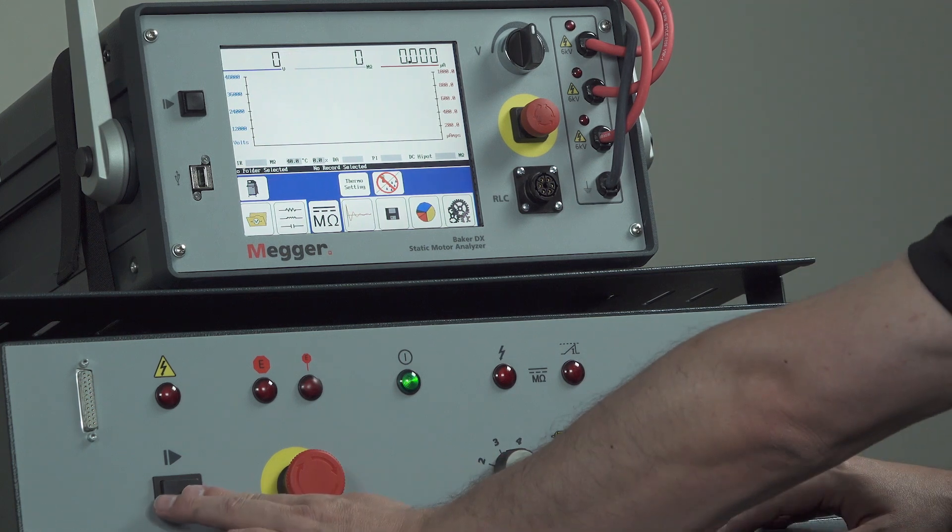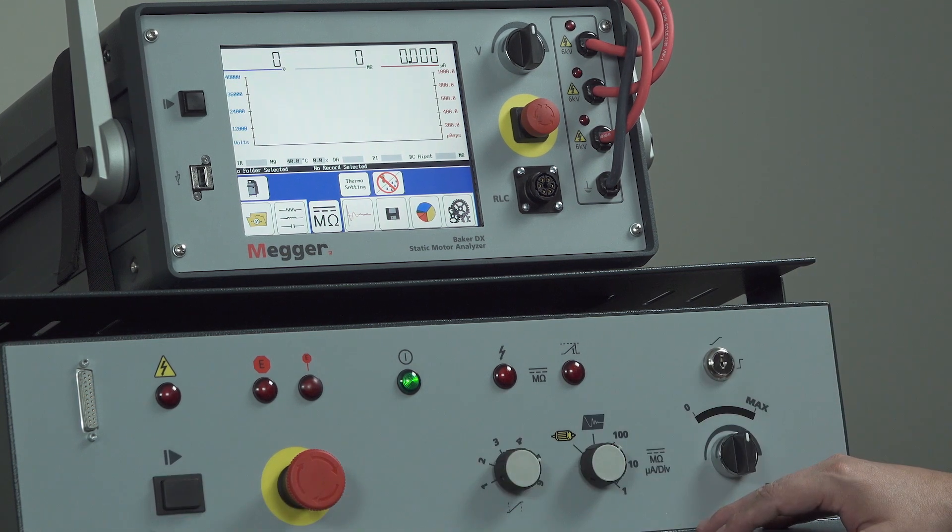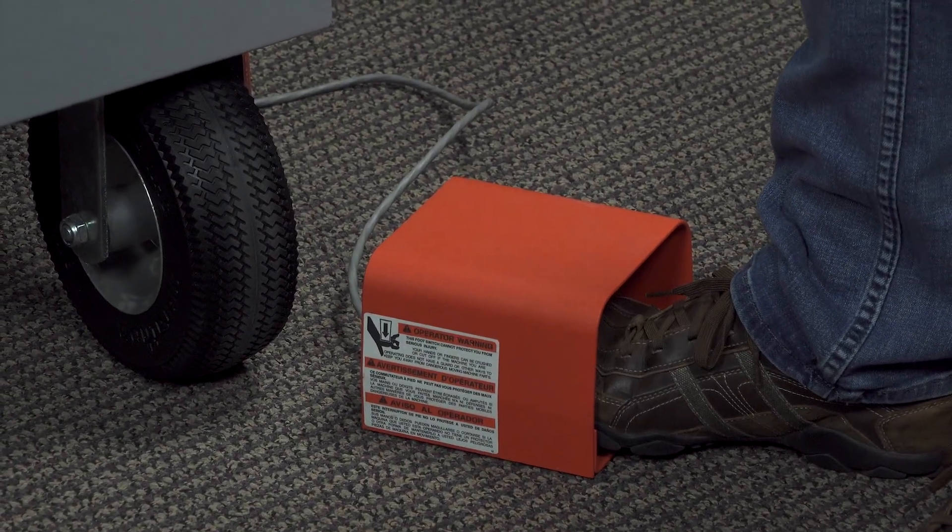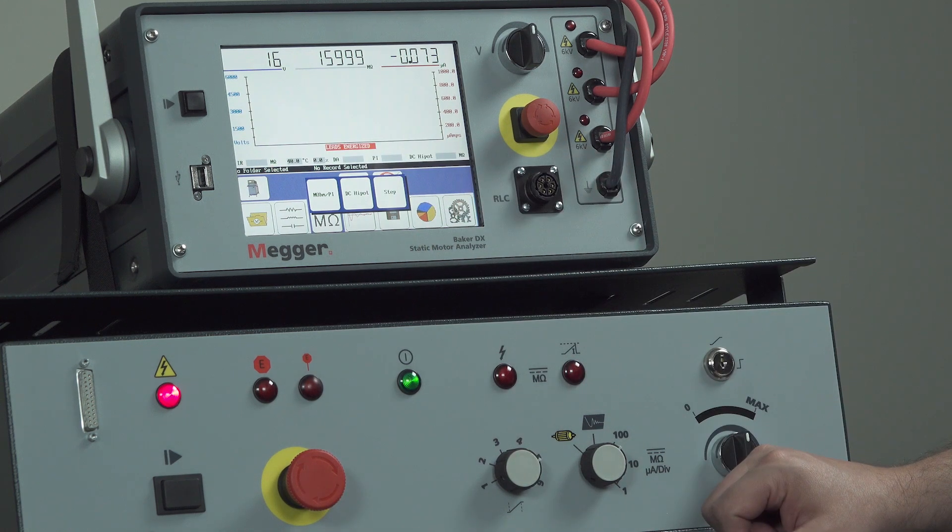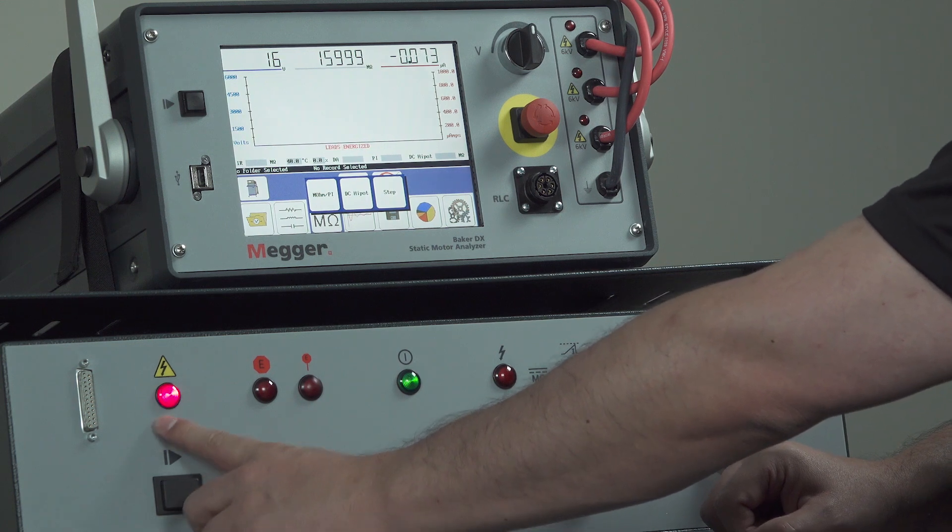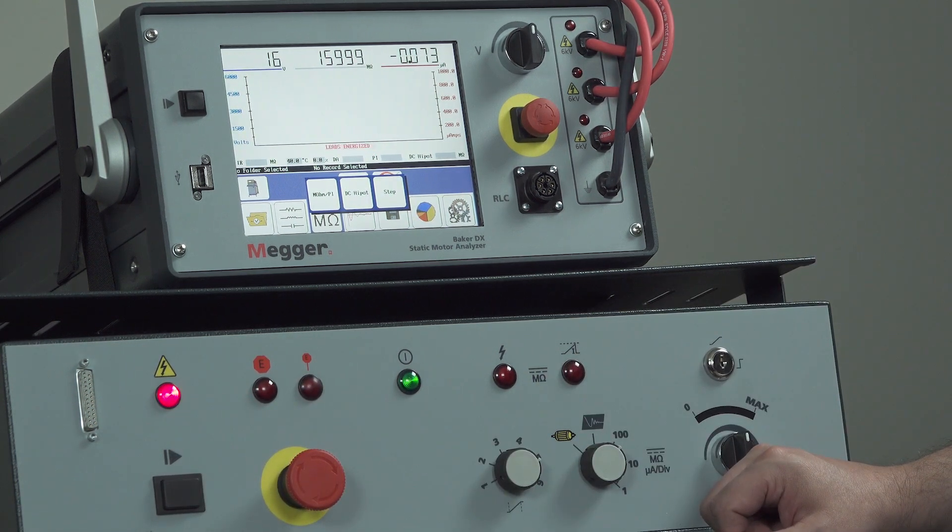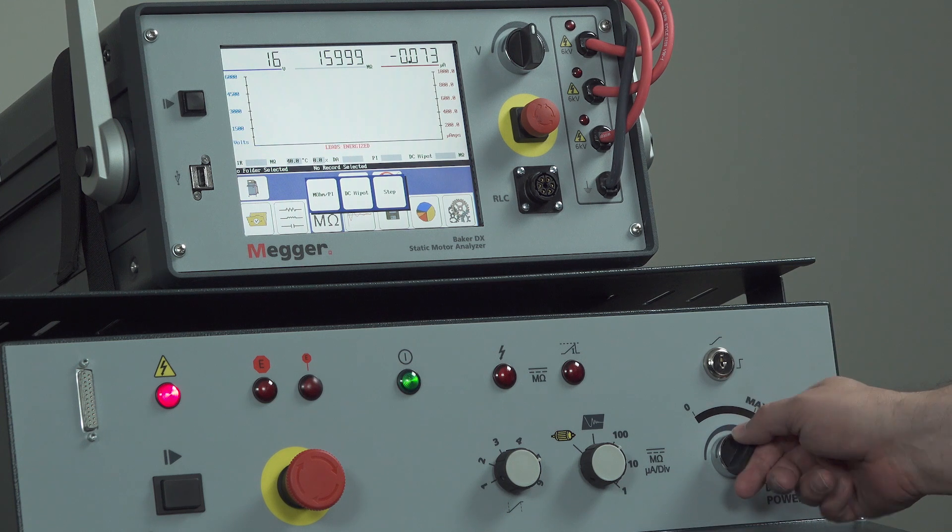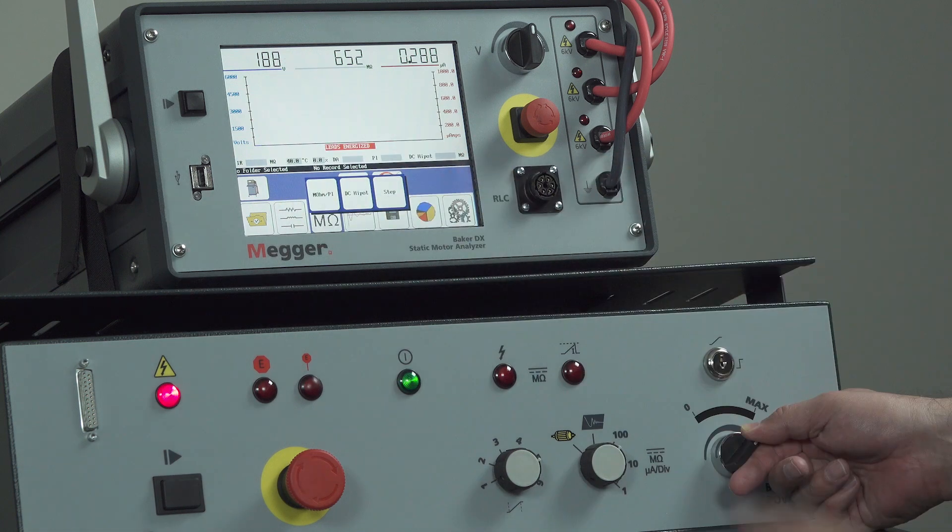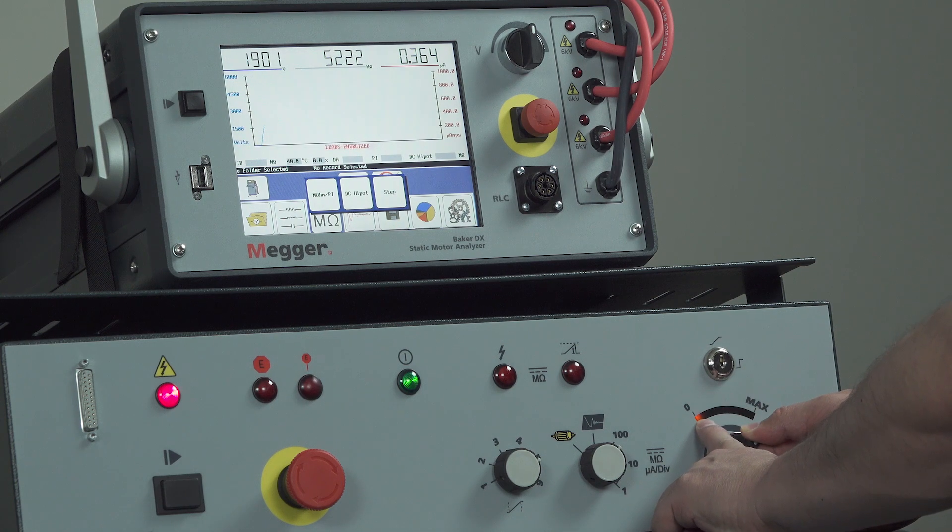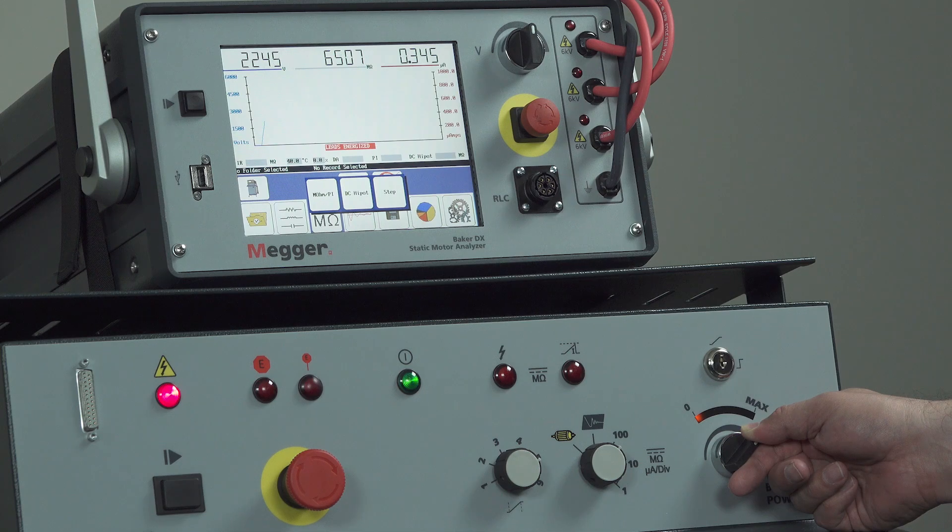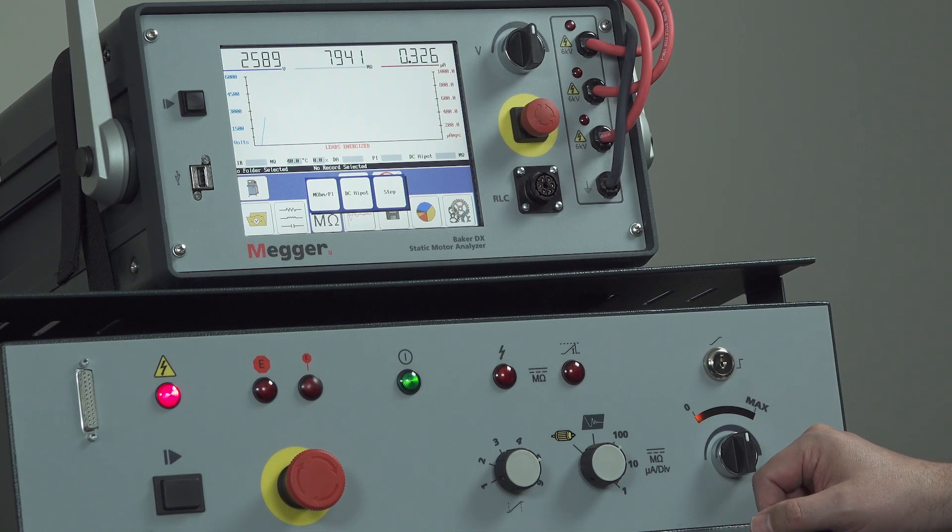To do that, we'll either press the push to test button and hold or depress the foot switch. I'm going to use the foot switch to start the test. We see the leads energize indicator there, and the leads energize light illuminated here. Now we want to ramp the voltage using the voltage control knob. We'll turn that clockwise and watch the voltage increase. We'll ramp to our first step, which in this case is going to be 2,500 volts. We also see the LEDs indicate that our voltage is increasing as well. Now we're at 2,500 volts. I'll stop ramping.